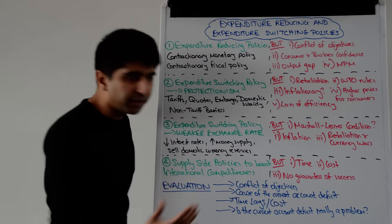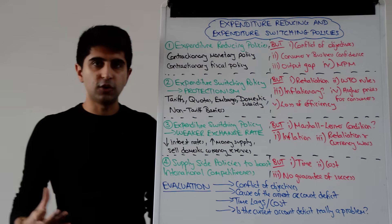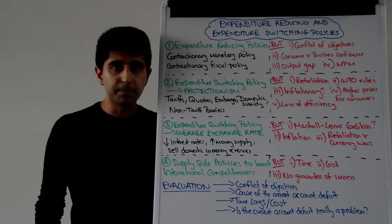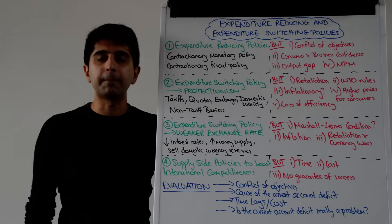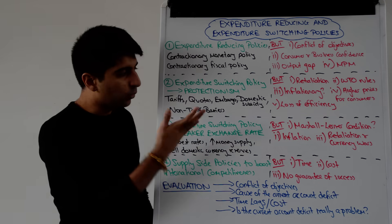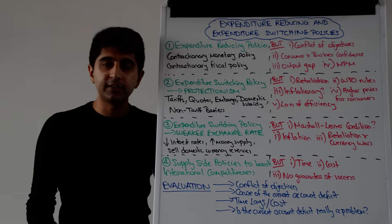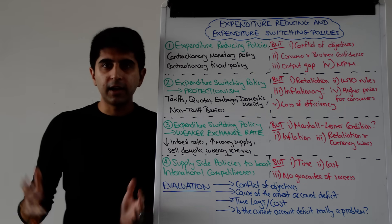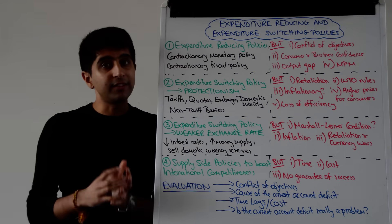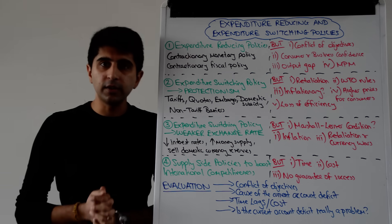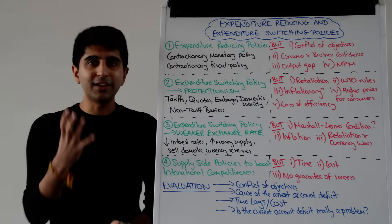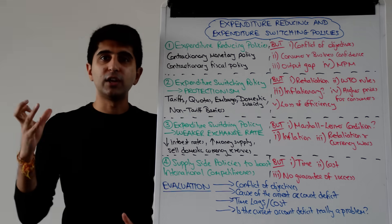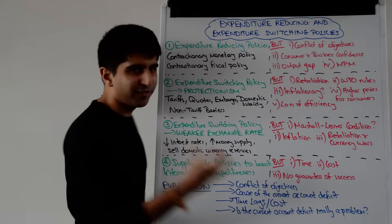All of these in theory will reduce the value of the exchange rate and help reduce the current account deficit. However, you've got to consider whether the Marshall-Lerner condition is being satisfied — questioning the elasticity of demand for exports and the elasticity of demand for imports. If the PED of exports plus the PED of imports does not sum to greater than 1, then a weaker exchange rate is not going to improve a current account deficit — it will actually make it worse. In the short run, the Marshall-Lerner condition may not hold and we may see a J-curve effect where initially the current account deficit worsens before it improves.